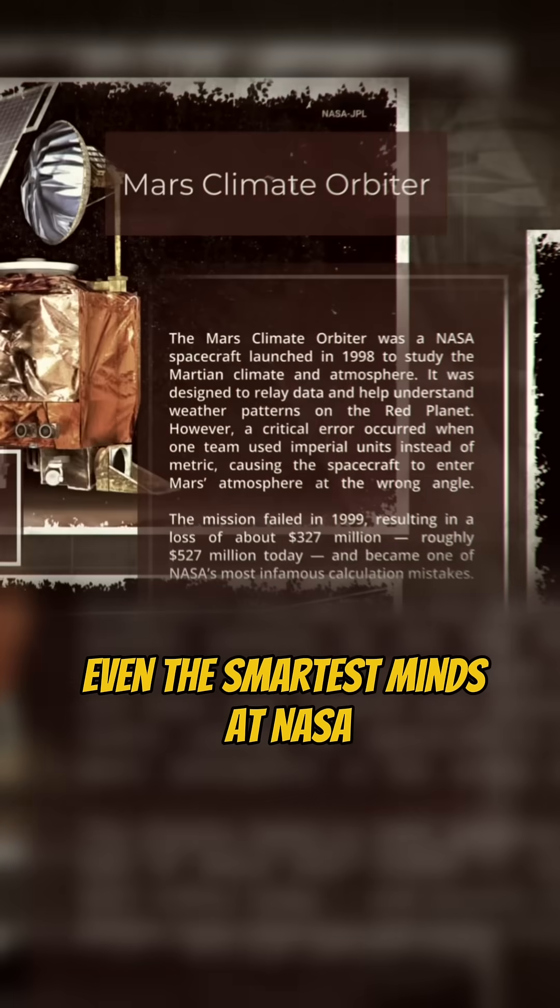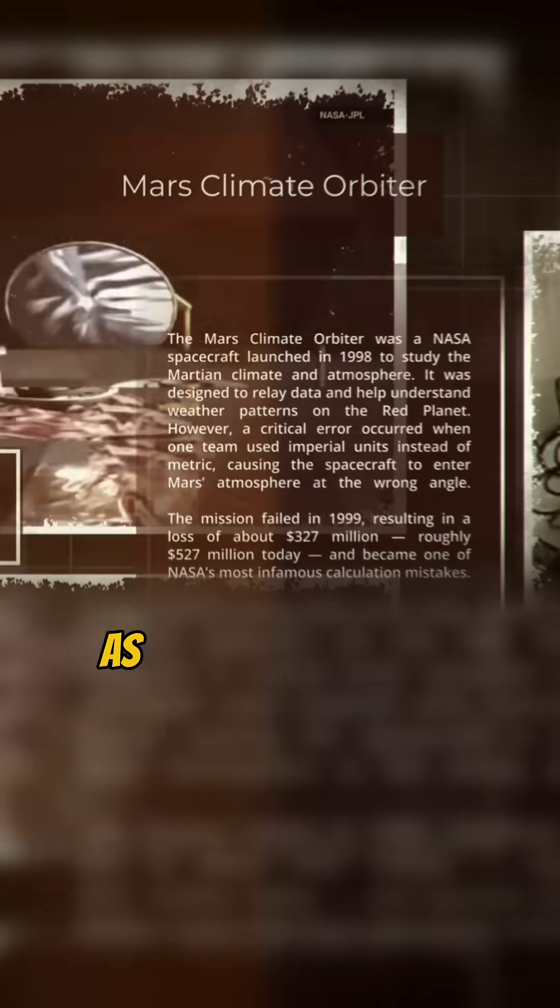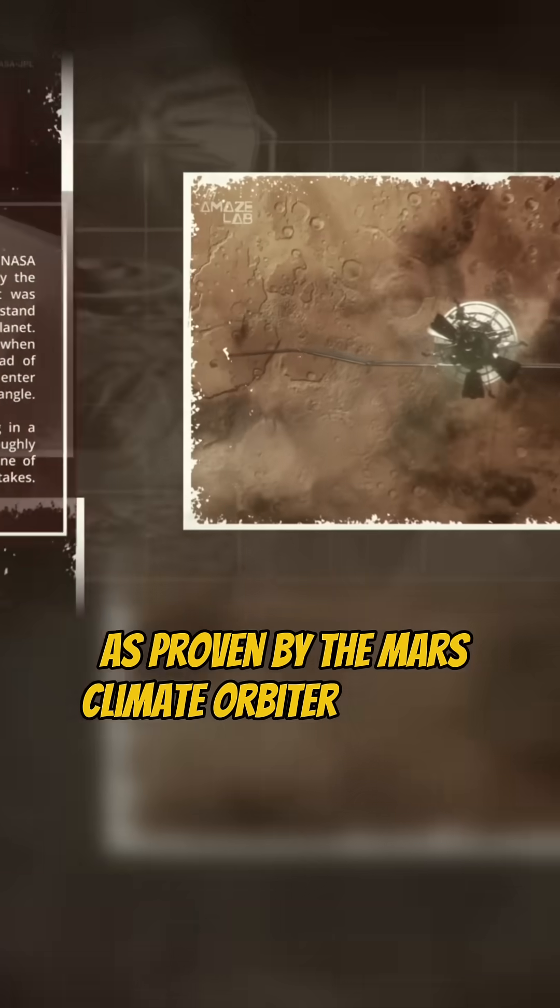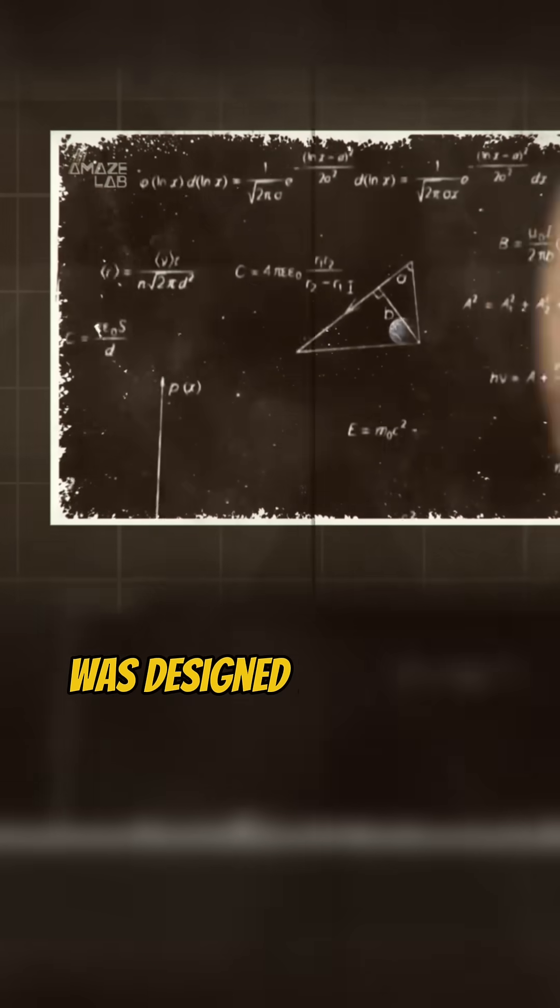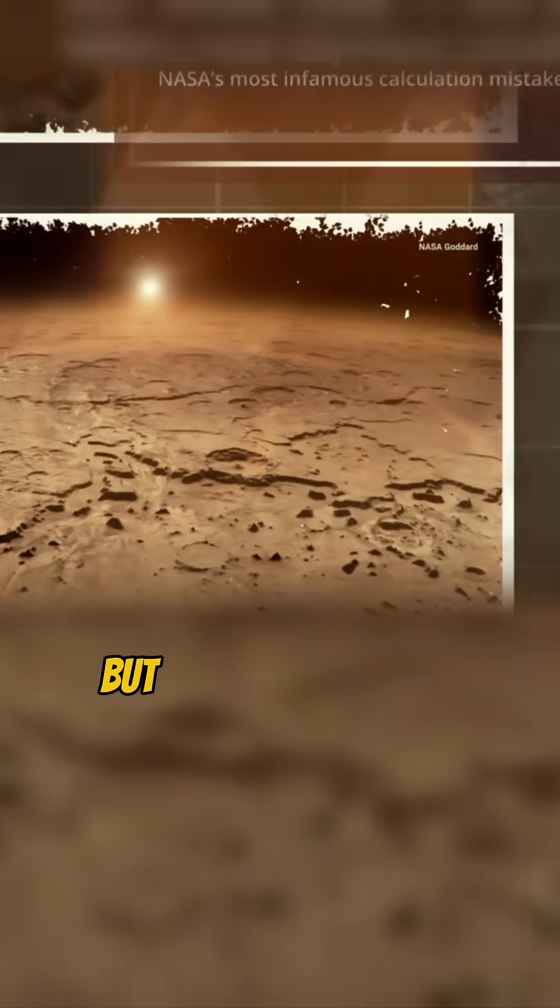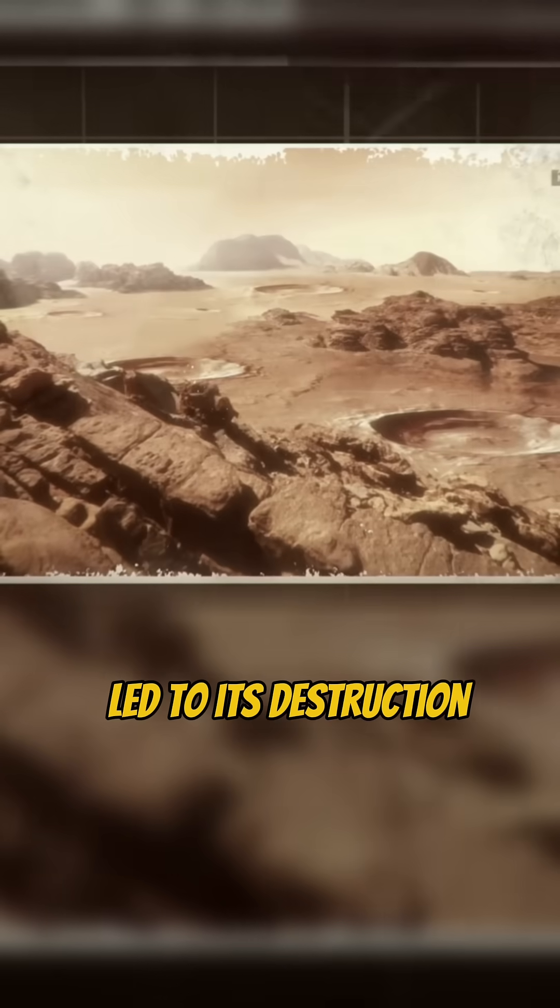Even the smartest minds at NASA can make expensive mistakes, as proven by the Mars Climate Orbiter Disaster of 1999. This ambitious mission was designed to study the Martian climate, but a seemingly minor calculation error led to its destruction.